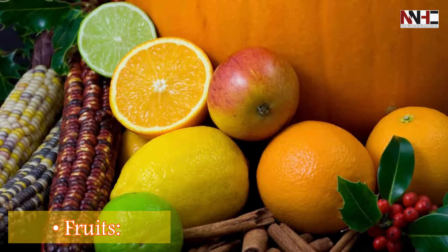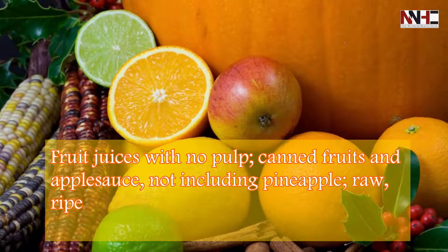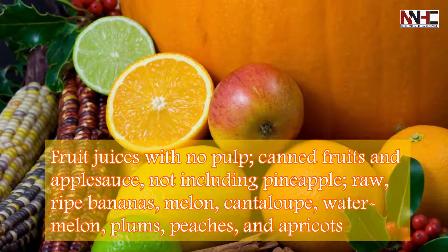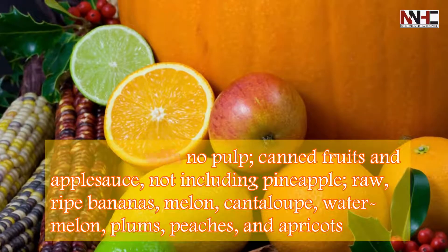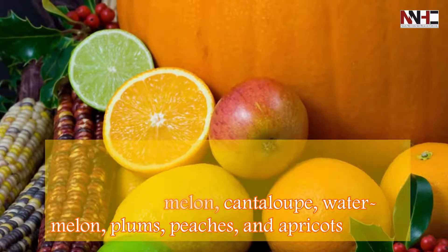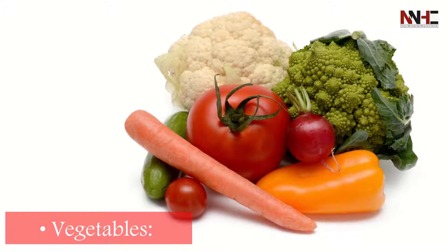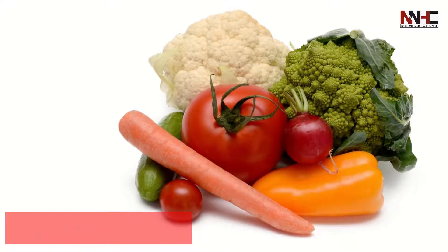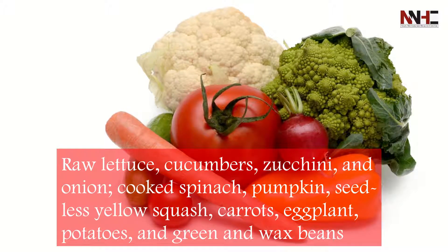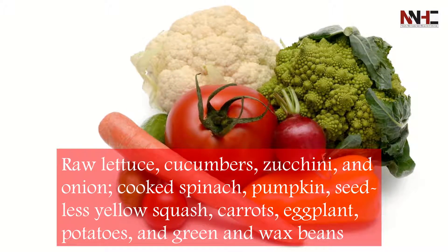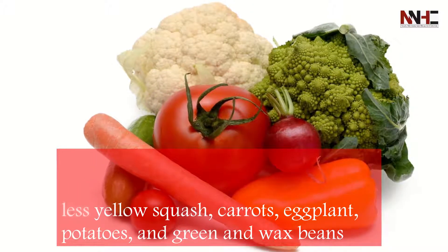Fruits: fruit juices with no pulp, canned fruits, and applesauce — not including pineapple — raw ripe bananas, melon, cantaloupe, watermelon, plums, peaches, and apricots. Vegetables: raw lettuce, cucumbers, zucchini, and onion; cooked spinach, pumpkin, seedless yellow squash, carrots, eggplant, potatoes, and green and wax beans.